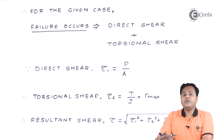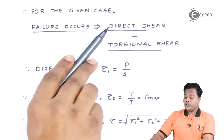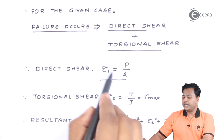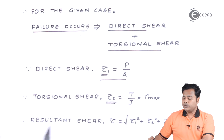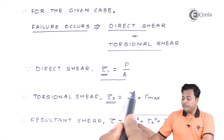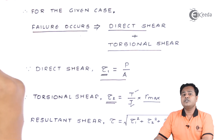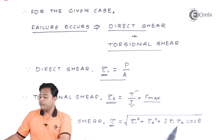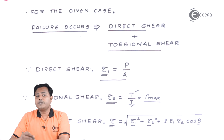For the given case, where the load is in the same plane as the weld, there are two failure modes: first, direct shear, and then torsional shear. We need to consider the thickness for direct shear — let us notate it as τ1 — and for torsional shear — let us notate it as τ2. The torsional shear formula is given by the torsional equations, for which we need to find out the torque, the polar moment of inertia, and the maximum radius. The resultant shear is found using the empirical relation combining τ1, τ2, and the angle theta.